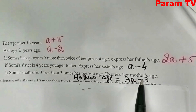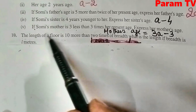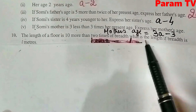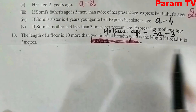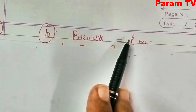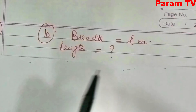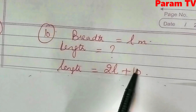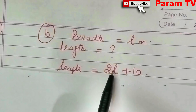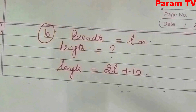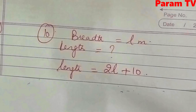Question number 10: the length of a floor is 10 more than twice the breadth. What is the length if the breadth is L meters? First, take twice the breadth: 2L. Then add 10. So length equals 2L plus 10. This is all about this exercise, students. Thank you very much for watching this video.